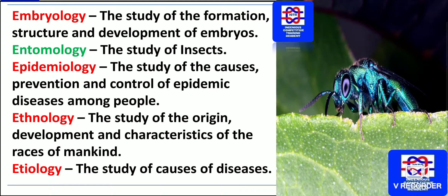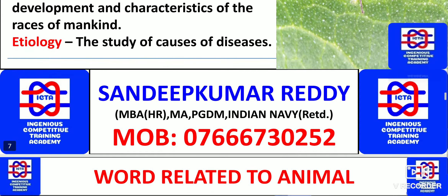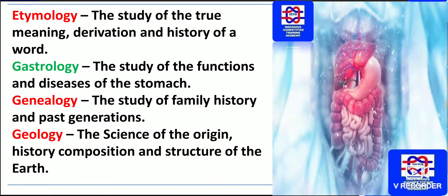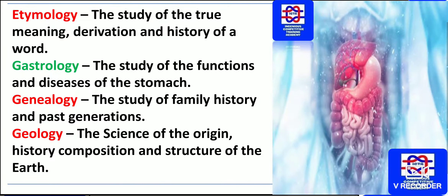Ethnology is the study of the origin, development and characteristics of races of mankind. Etiology is the study of the causes of diseases. Next we have etymology — the study of the true meaning, derivation and history of a word.